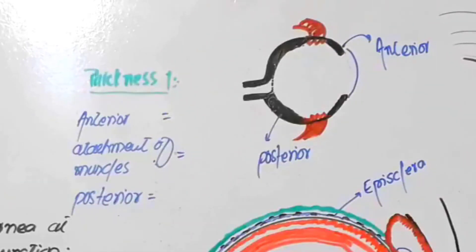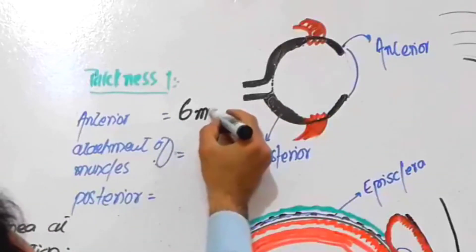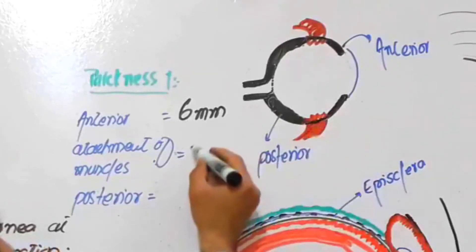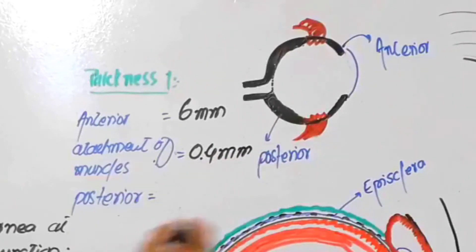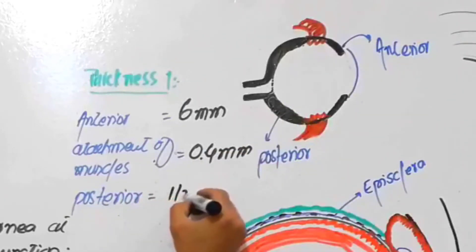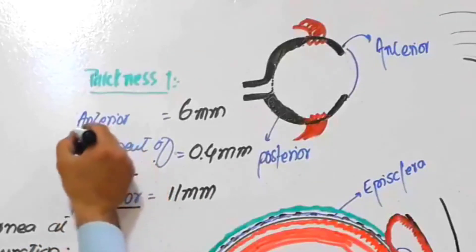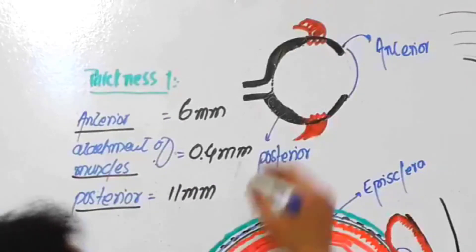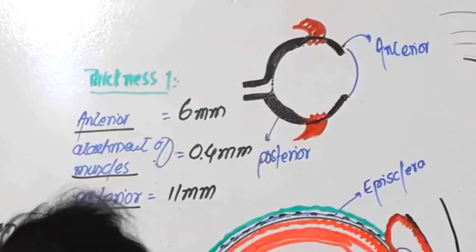The anterior thickness is about 0.6 mm. At the point of attachment of the rectus muscles the thickness is very narrow — about 0.4 mm. And the thickness posteriorly is much thicker, about 1.1 mm. These are the three important points where we find the thickness of the sclera.